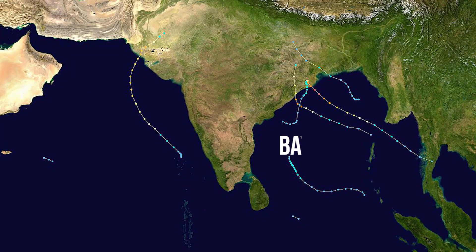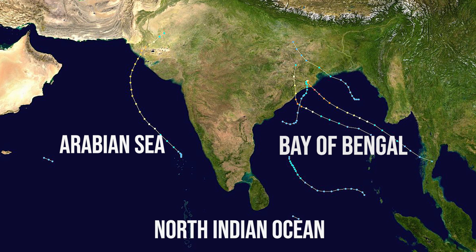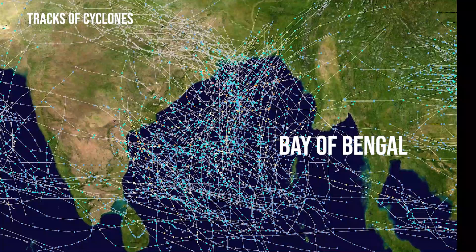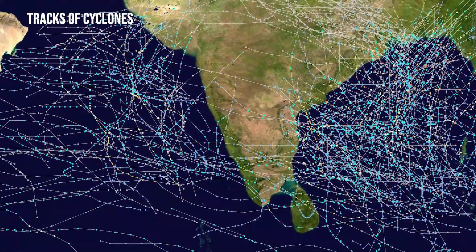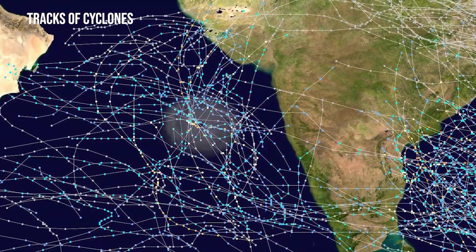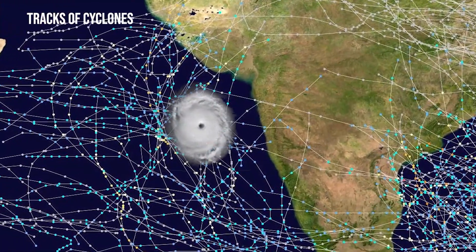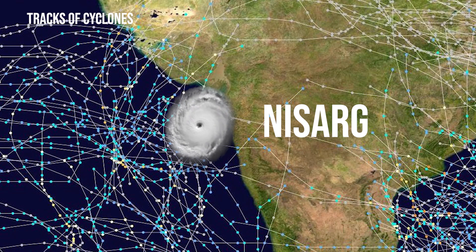India ke east mein Bay of Bengal aur India ke west mein Arabian Sea hai. In dono ko milaakar hum North Indian Ocean kehte hain. India mein aane wali zyada tar cyclone Bay of Bengal mein tayyar hoti hain. Arabian Sea mein tayyar hone wali cyclone Africa ke tatt par jaati hain, lekin kabhi kabhi yeh cyclone apna raasta badal kar India mein bhi aati hain. Haali mein aaya Nisarga cyclone Arabian Sea mein hi tayyar hua tha.